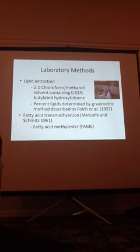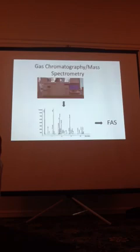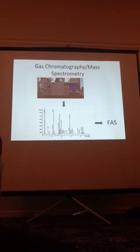For some of the laboratory methods: lipid extraction uses a chloroform-methanol solvent. We determine the percent lipids in each sample gravimetrically. Then to separate out the distinct fatty acids, we do a trans-methylation where we add a methyl group, so the fatty acids can be separated out using gas chromatography mass spectrometry — that's the GC-MS. What you get from it is basically a chromatogram, each peak representing a different fatty acid, and from there we get our fatty acid signatures.